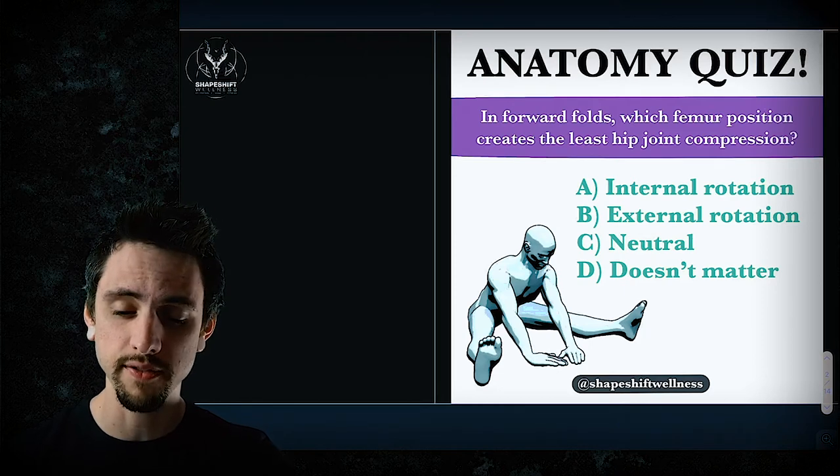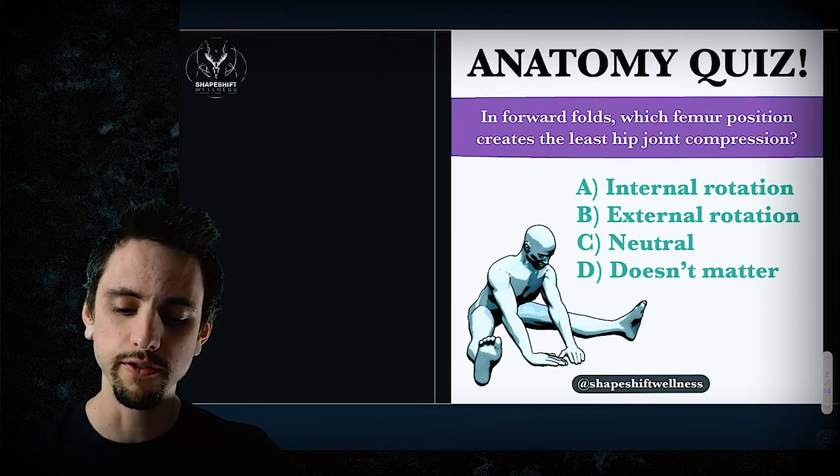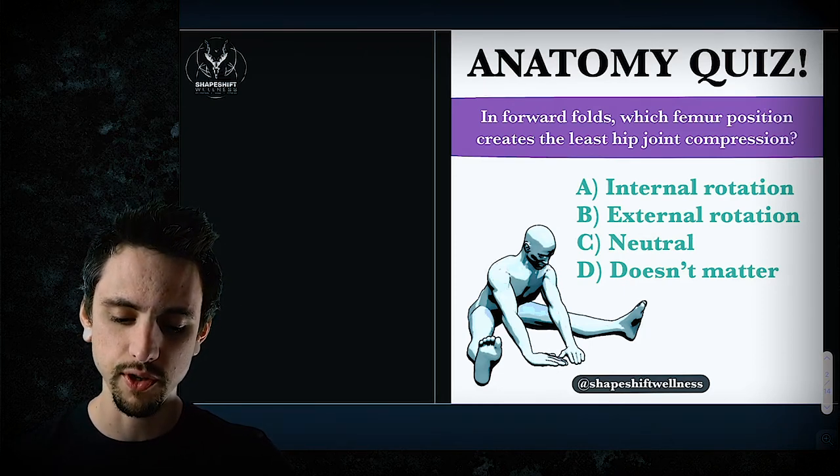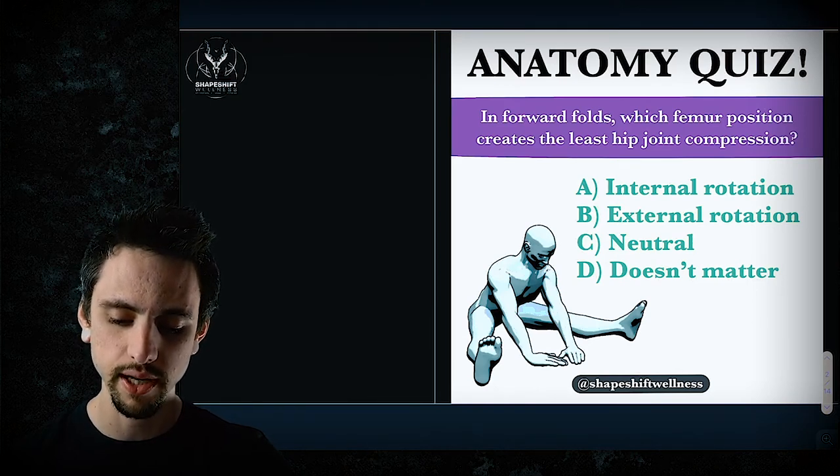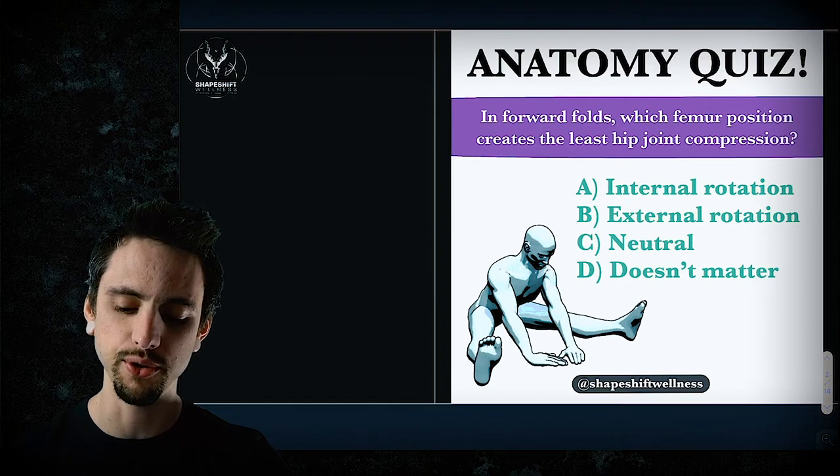Okay, so I'm hoping that you paused the video. So in forward folds, which femur position creates the least hip joint compression? Internal rotation, external rotation, neutral, or it doesn't matter.